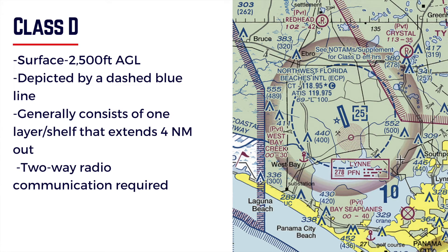Class D airspace is the least busiest airspace that we could operate in as a remote pilot. Though it's still controlled — you have to get approval to fly into this airspace. It's just not as busy as B or C would be.